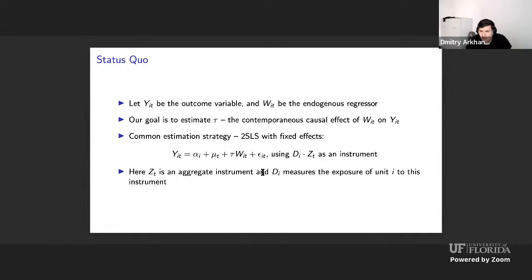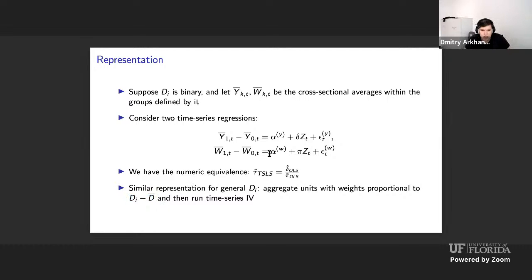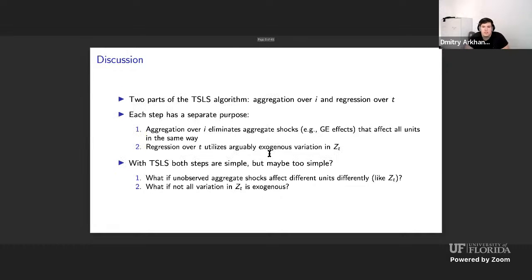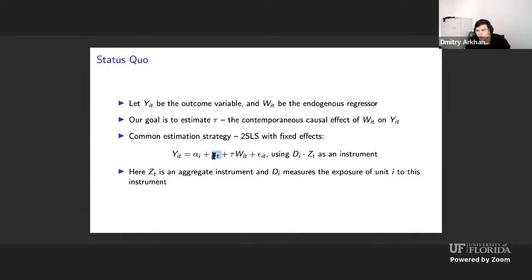A similar representation holds when D_i is not binary. In that case you aggregate units with weights proportional to the demeaned version of D_i, then run time-series regressions. This algorithm has two parts: aggregate over i, then regress over t, and take the ratio. The motivation for each step is different. We aggregate over i to construct this difference, and we care about this difference because we need to eliminate time fixed effects.